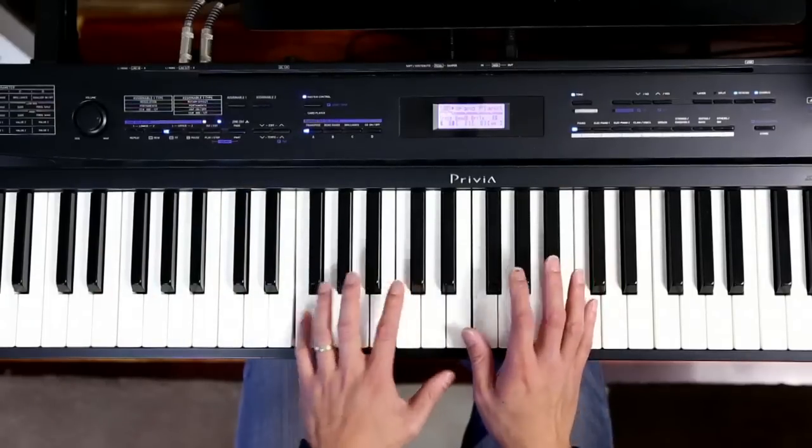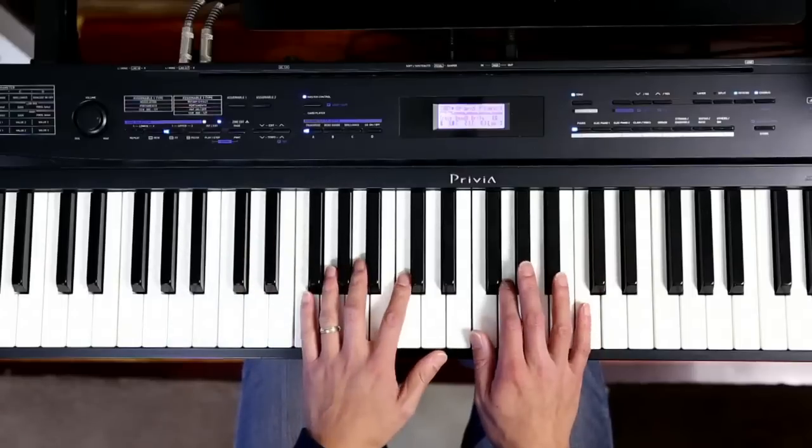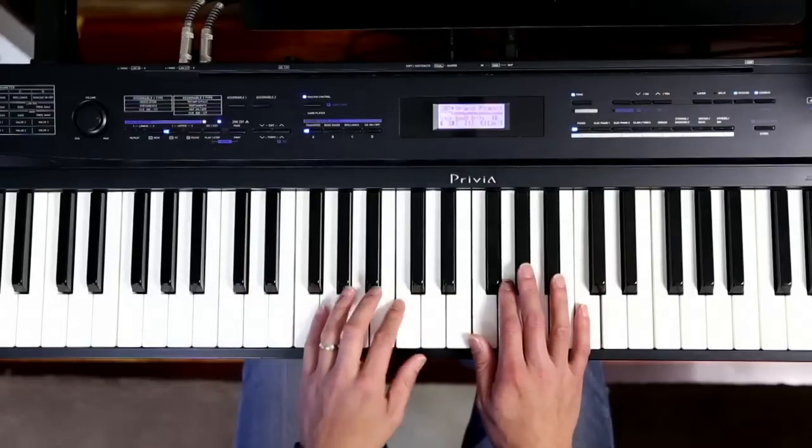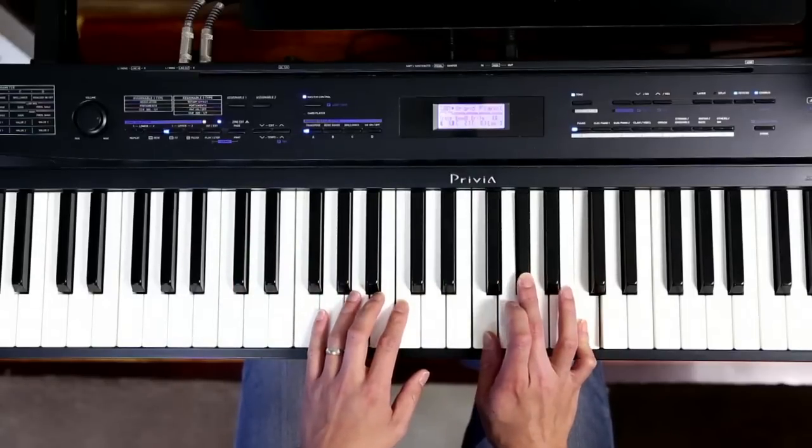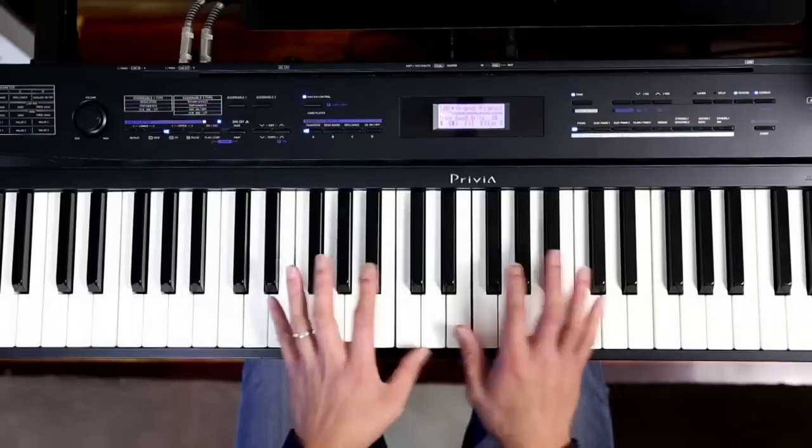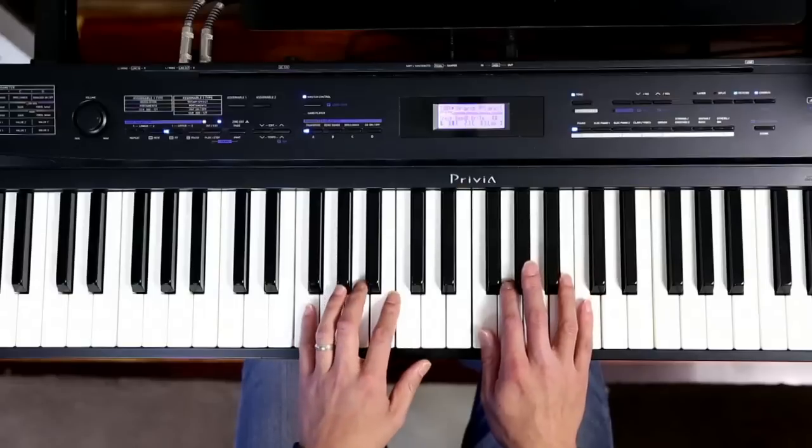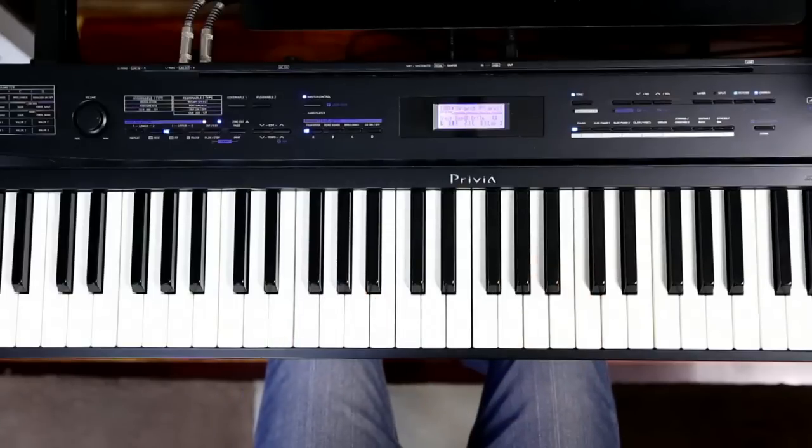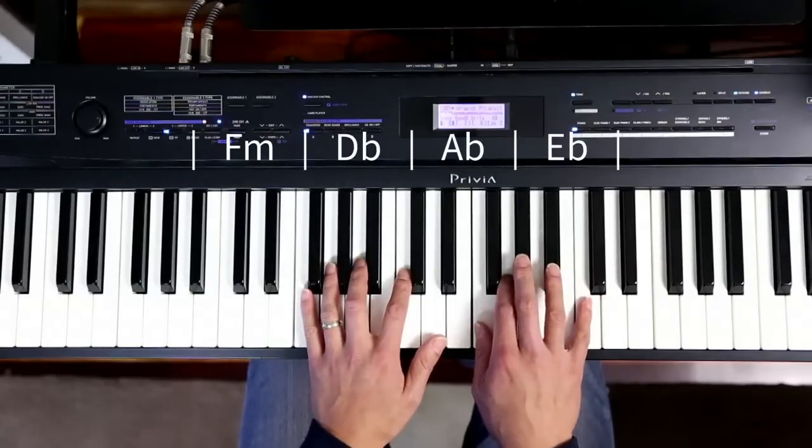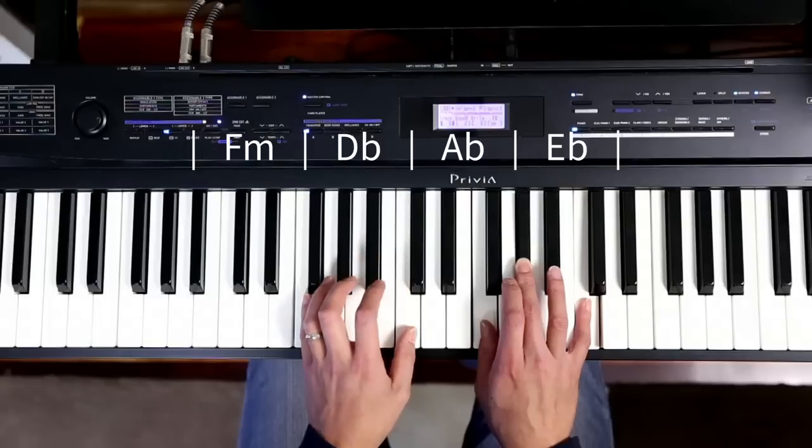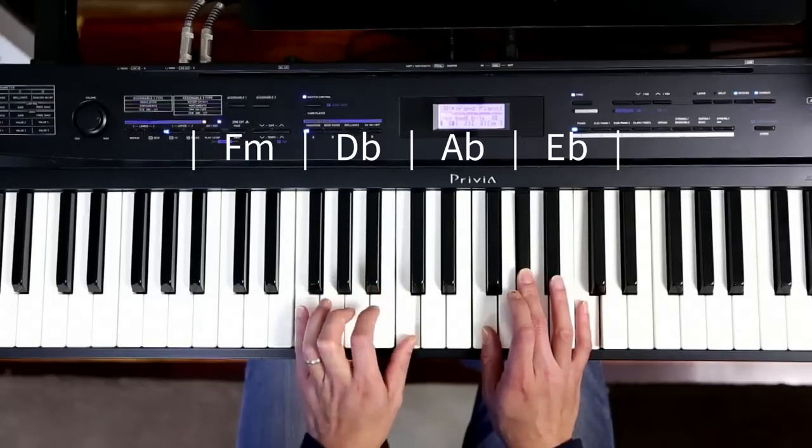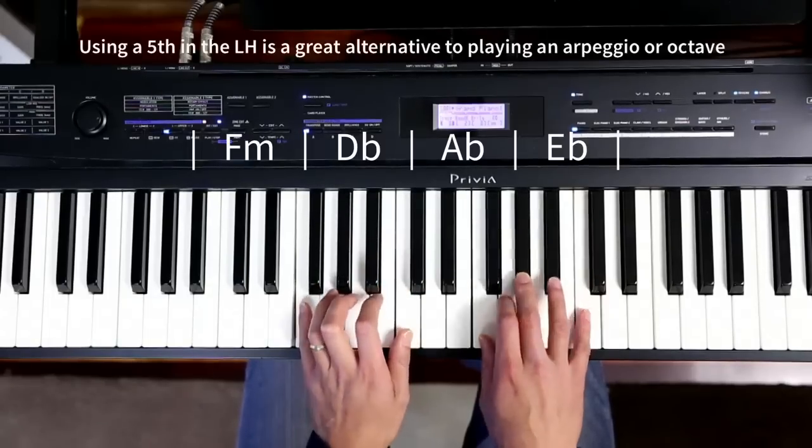So, we've done our preliminary basic work, just getting ourselves familiar with the one, four, five—our three major chords, and our relative minor, which is the sixth. We've played our scale, so we know what notes we're going to use in this progression. The first chord is F minor, as you can see on the screen. I'm putting a fifth in the left hand. F and C in the left hand.